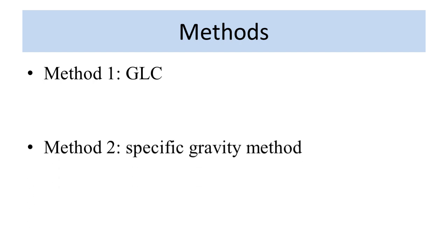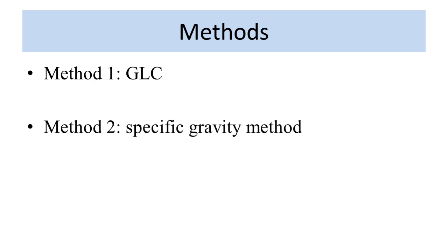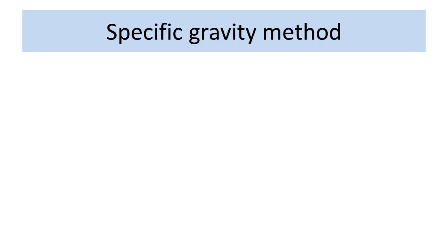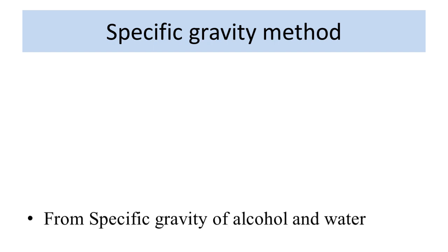Now let us see what is the methods available for determination. There are two methods available. One is gas liquid chromatography method and second method is the specific gravity method. Now coming to specific gravity method because this does not require much instrumentation, it can be done very easily in the college level. When we talk about GLC, we should have a gas chromatographic unit with us but a simple technique which can be determined, we can determine the alcohol content by a simple technique of specific gravity method.